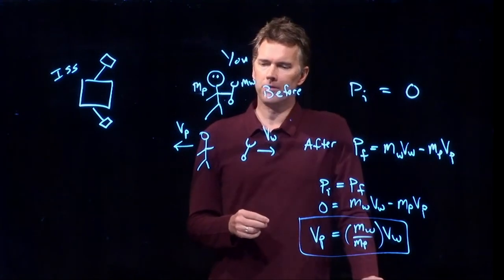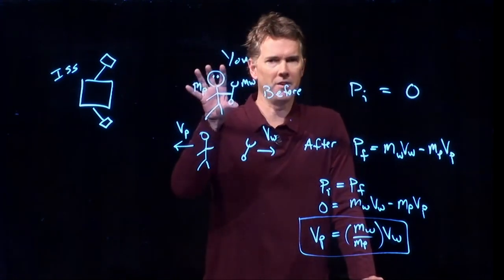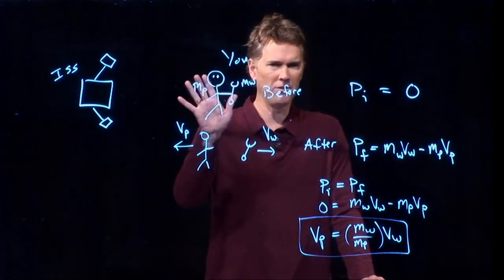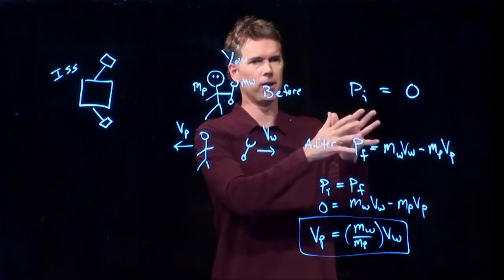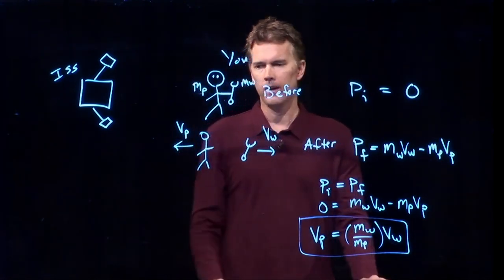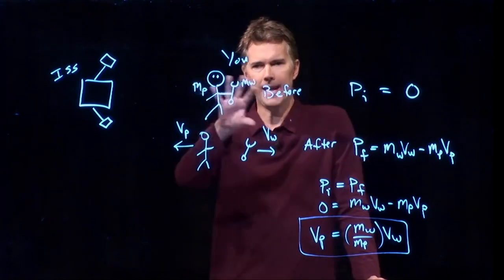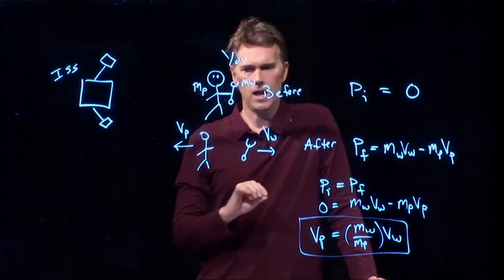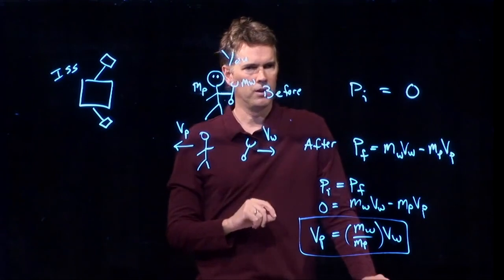But this is sort of interesting because we talked about a very simple picture here, right? A person with an object, throwing an object, they go the other way. But this can be any object and it doesn't have to be a person. So guess what? This sort of behavior is exactly the same as a rocket.